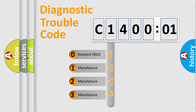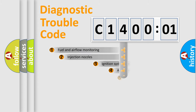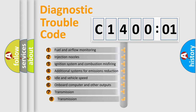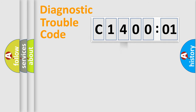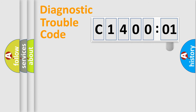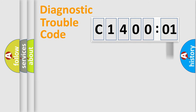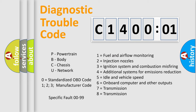If the second character is expressed as zero, it is a standardized error. In the case of numbers 1, 2, or 3, it is a manufacturer-specific error expression. The third character specifies a subset of errors. This distribution is valid only for the standardized DTC code. Only the last two characters define the specific fault of the group. The add-on to the error code serves to specify the status in more detail — for example, a short to ground. Note that such a division is valid only if the second character code is expressed by the number zero.